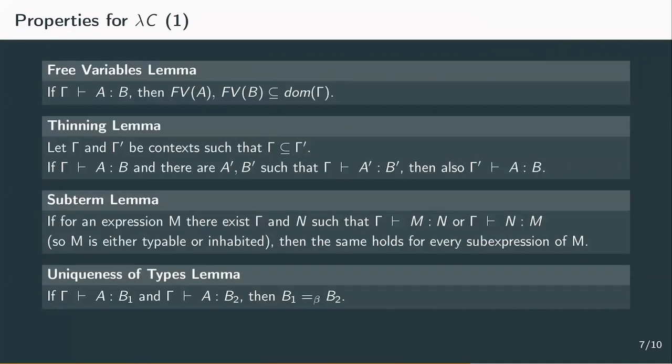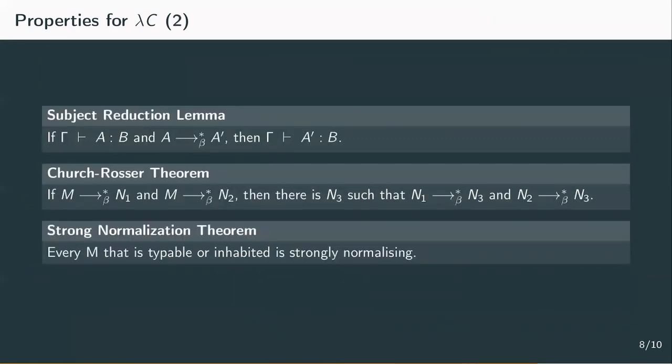The next one is a very important property for decision problems, the uniqueness of types lemma. This has to be adapted for all systems where dependent types are admitted. Then we have uniqueness up to beta equivalence. The last three were the subject reduction lemma, so if a term m is reducible to a term n, and m has type sigma, so does n. The Church-Rosser theorem, which states that one can't get lost when executing a derivation. And lastly, the strong normalization theorem. All systems that we've introduced are strongly normalizing.